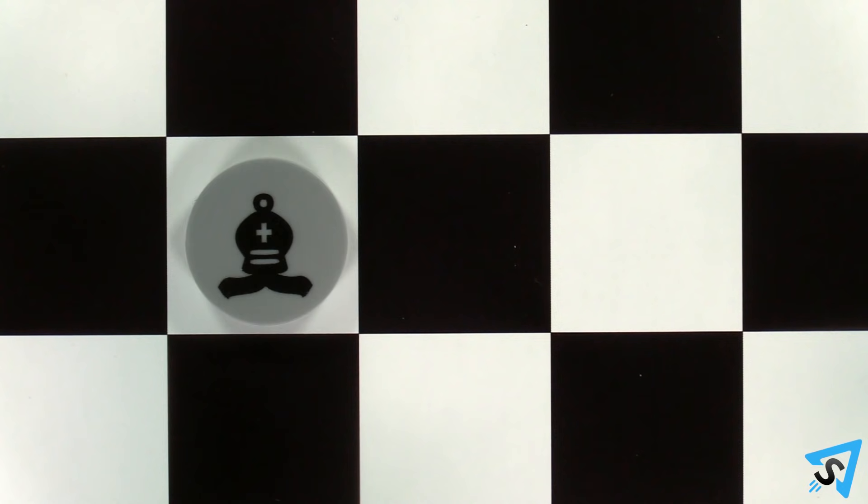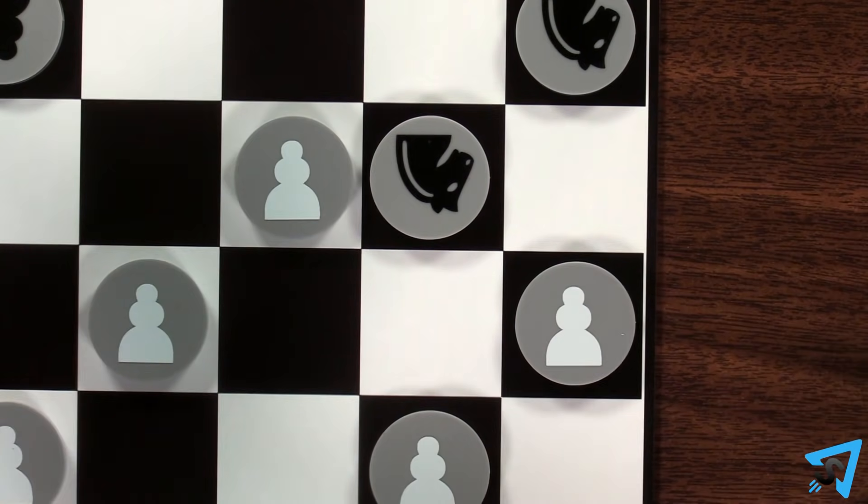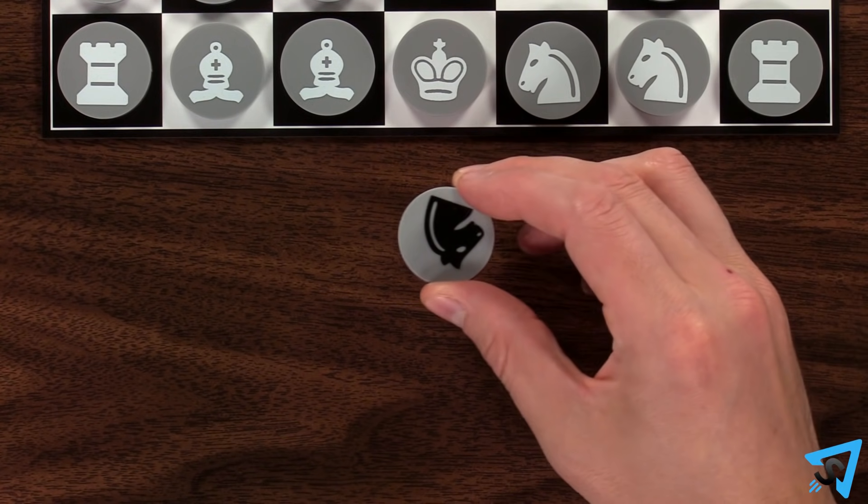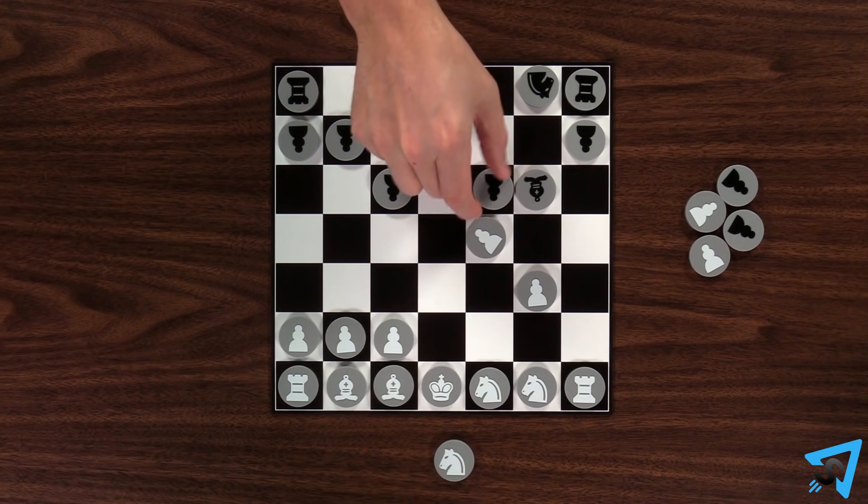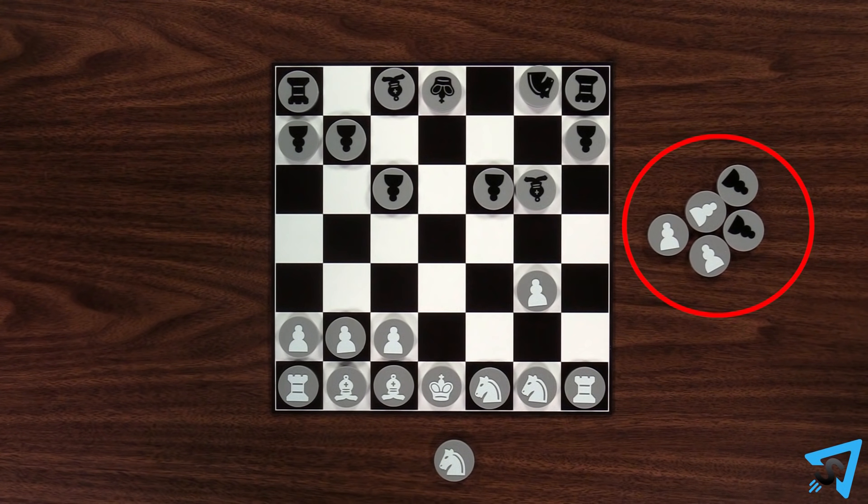When you capture an opponent's Bishop, Knight, or Rook, it is placed in your pool of pieces. Captured Pawns do not go in your pool, but instead are removed from the game.